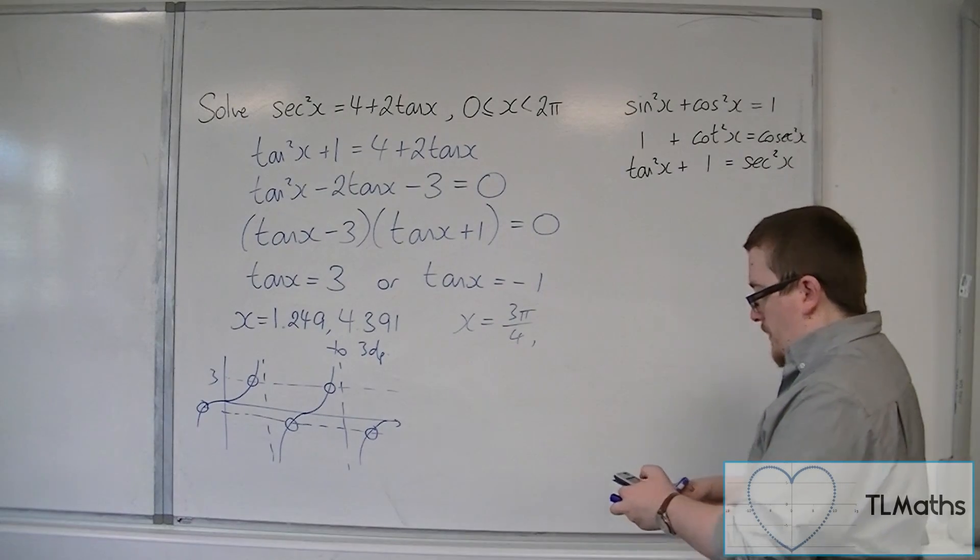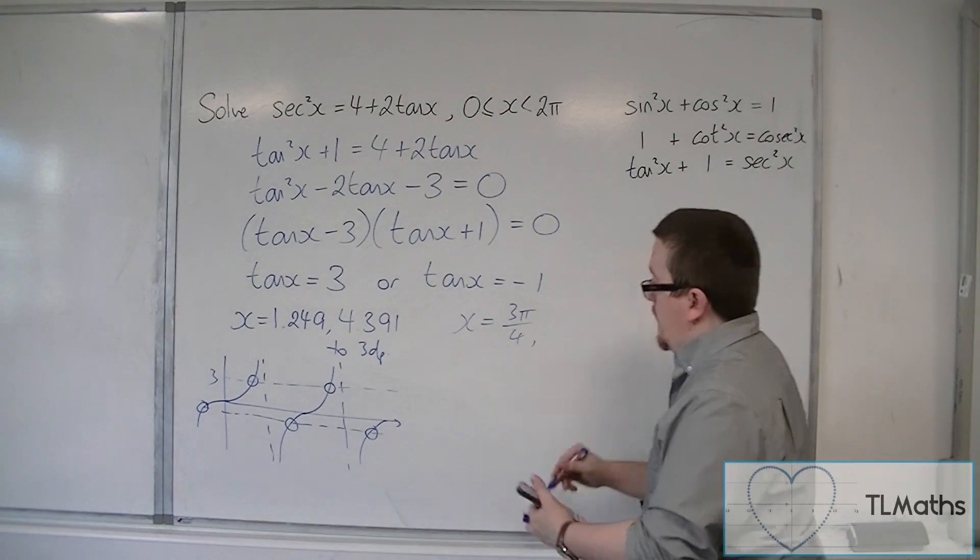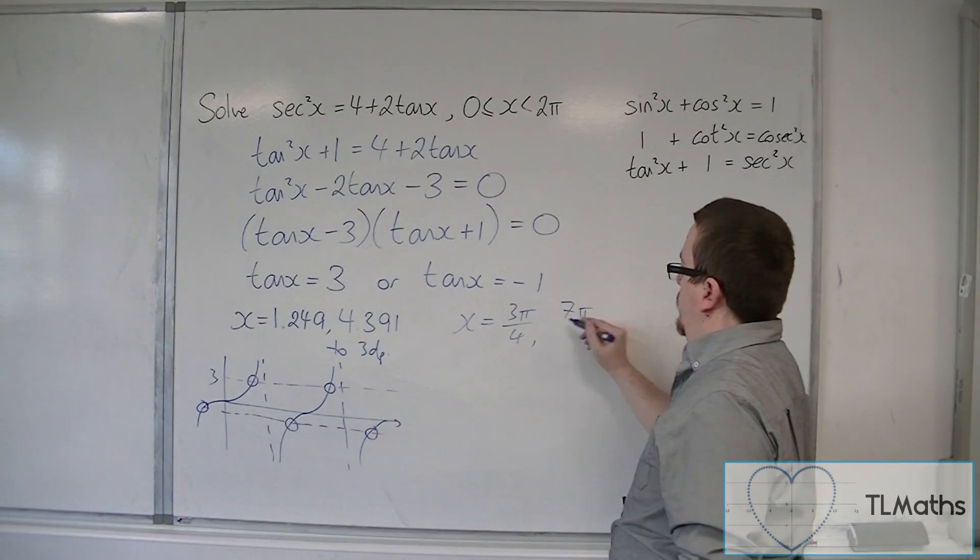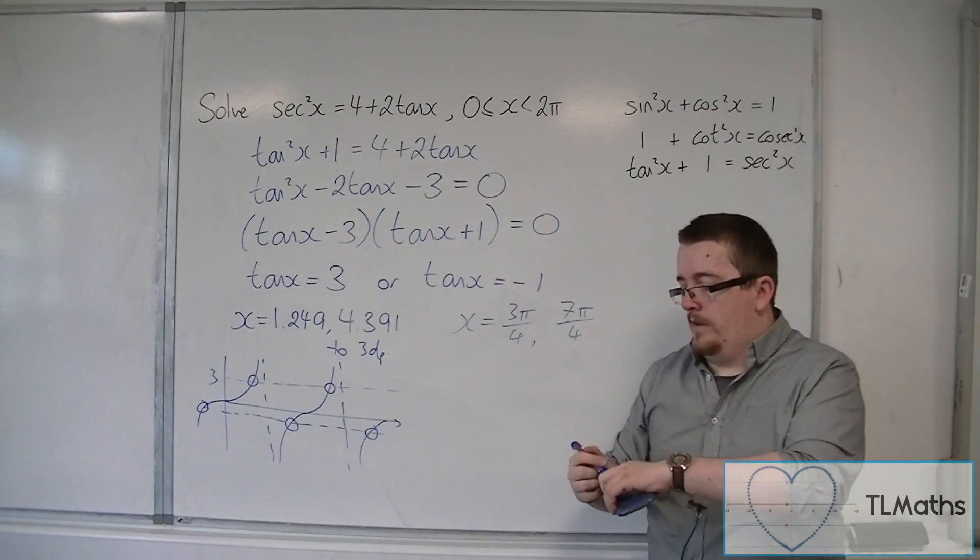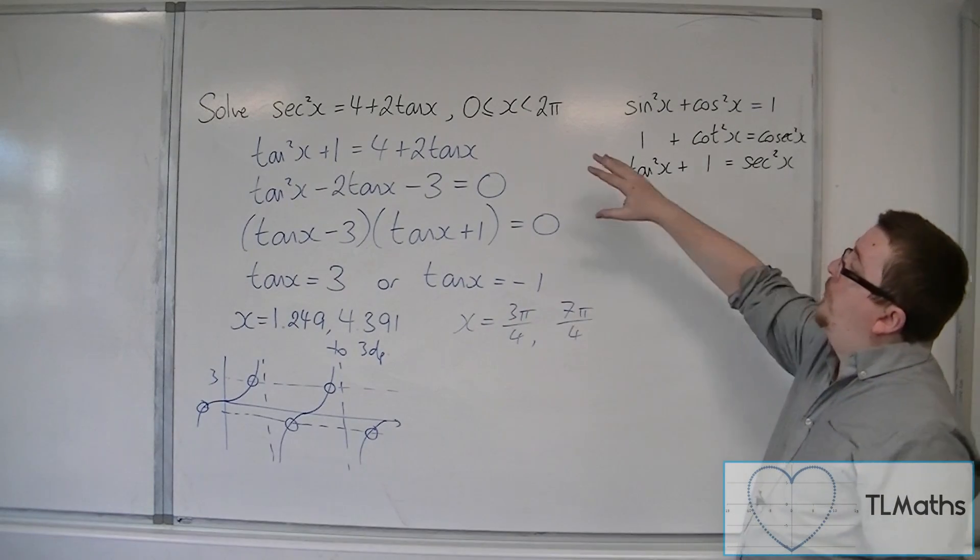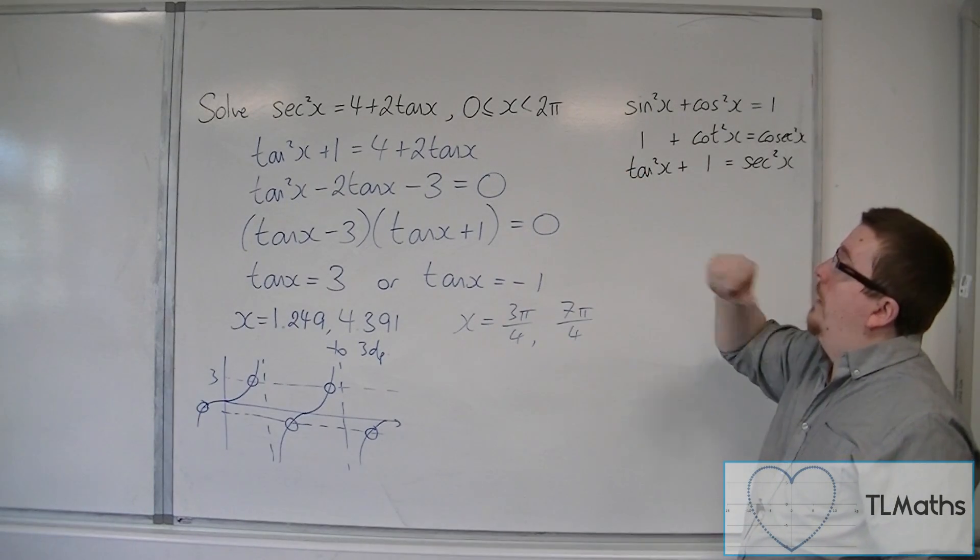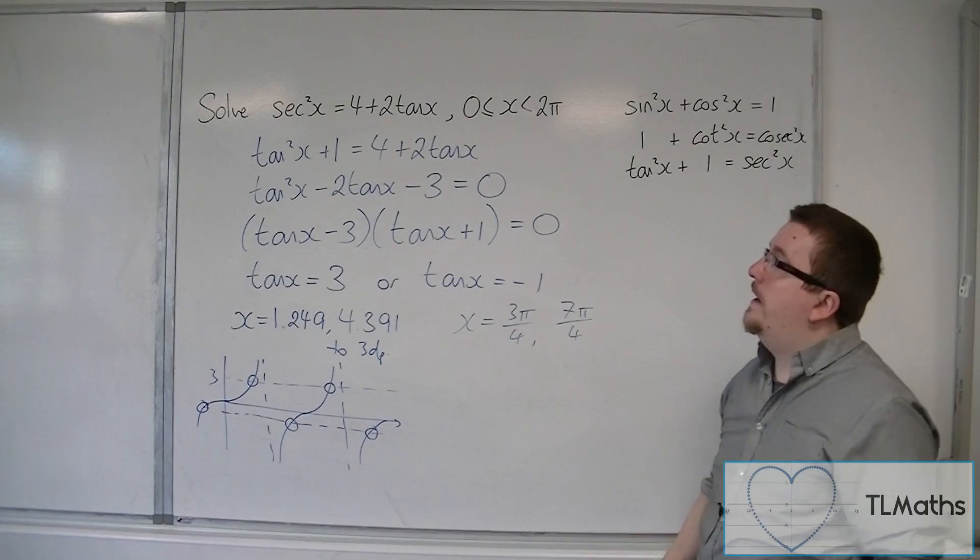And then add on another pi to get this solution here. So we get 7 pi over 4. And so we have 1, 2, 3, 4 solutions that solve the original problem involving sec and tan.